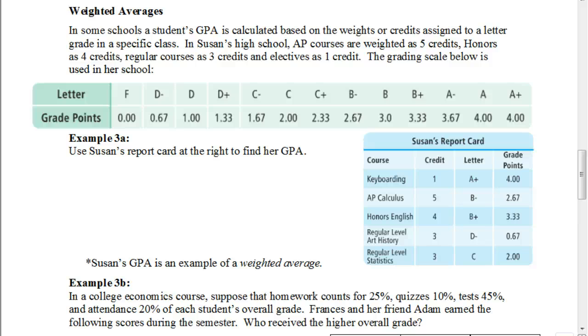Where the AP calculus, a more difficult, more rigorous course, probably meets every single day, is given a credit of five, or a weight of five. And so the way that we calculate a weighted mean is we're going to take those credits and multiply them by the grade point that she's earned, that's reflected by her letter grade. So she got an A plus in keyboarding, so she earned four grade points. So the weight of that is we would take one times four.